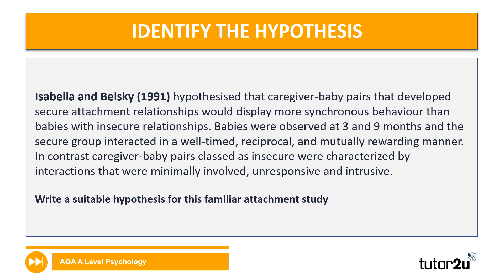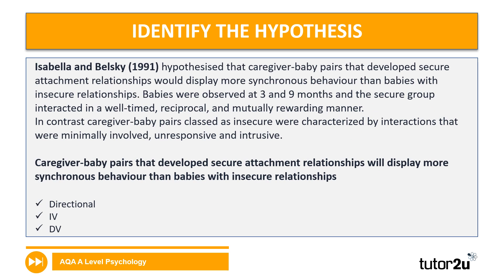One from attachment this time. Isabella and Belsky hypothesised that caregiver baby pairs that develop secure attachment relationships would display more synchronous behavior than babies with insecure relationships. Babies were observed at three and nine months, and the secure group interacted in a well-timed, reciprocal and mutually rewarding manner. In contrast, caregiver baby pairs classed as insecure were characterised by interactions that were minimally involved, unresponsive and intrusive. The hypothesis for this study is: caregiver baby pairs that develop secure attachment relationships will display more synchronous behavior than babies with insecure relationships — clearly specifying the direction of the results.